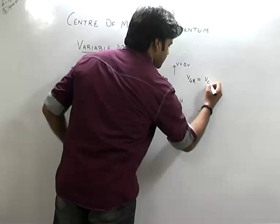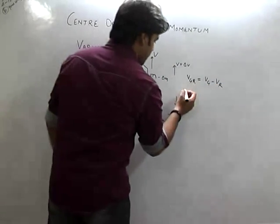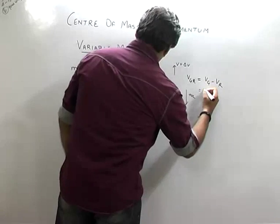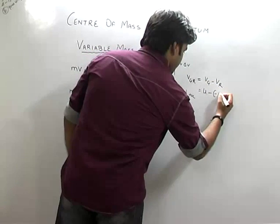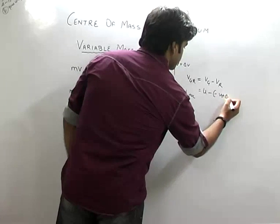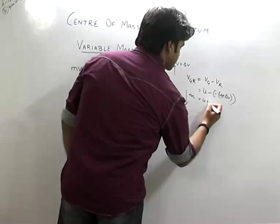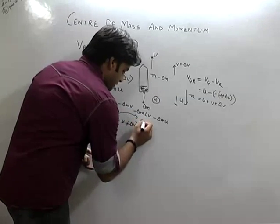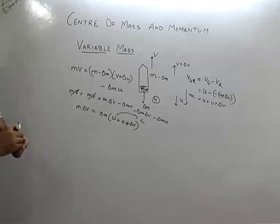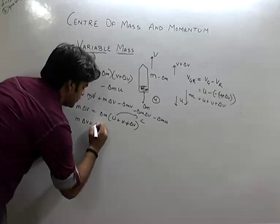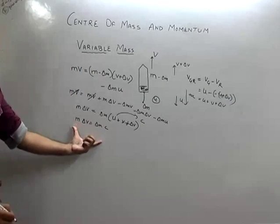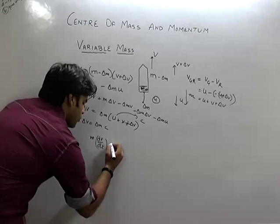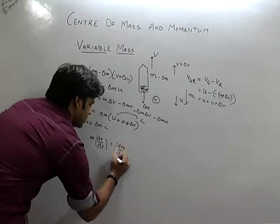The velocity of gases with respect to the rocket equals velocity of gases minus velocity of rocket. Taking positive direction as downward, velocity of gases relative to rocket equals U minus (minus V plus delta V), which gives U plus V plus delta V. Let us call this quantity C. So M·delta V equals delta M times C. Differentiating with respect to time: M·dV/dt equals C·dm/dt.